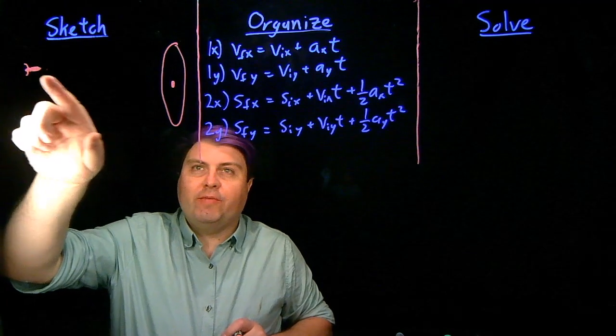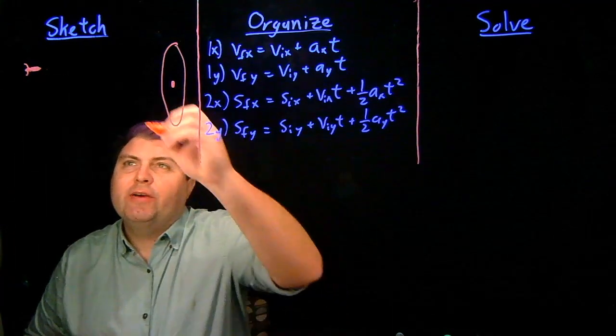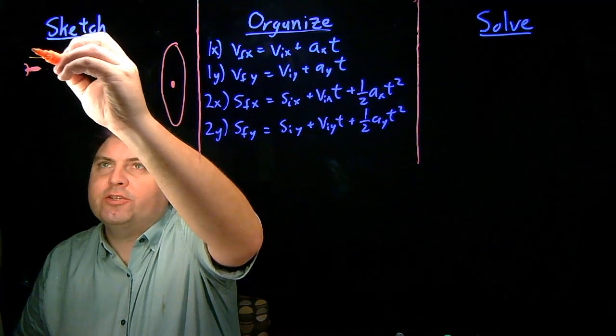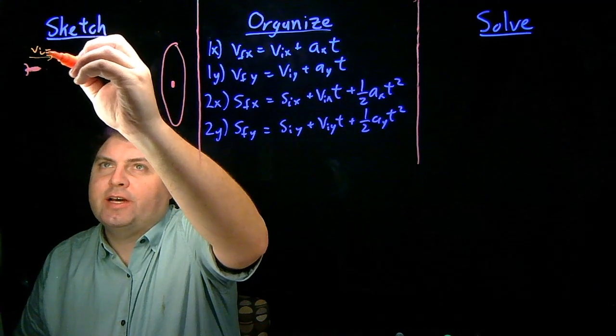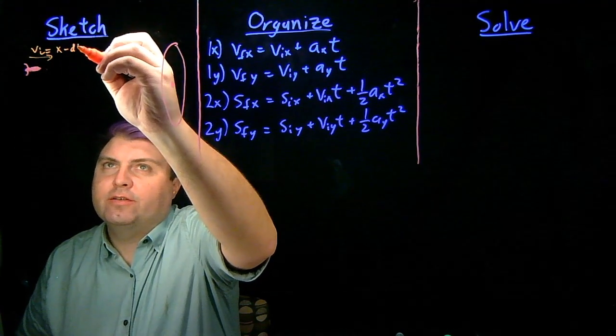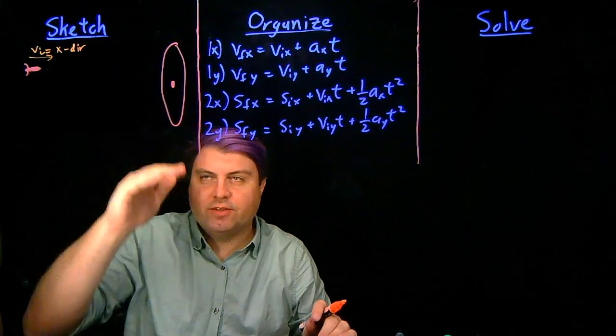We have a dart, and we want to throw it at a bullseye, and we want to have it such that the initial velocity is entirely in the x direction, so it kind of has an angle of zero.